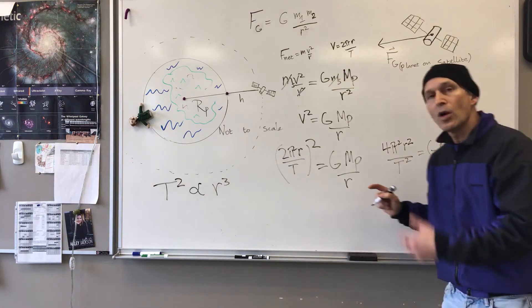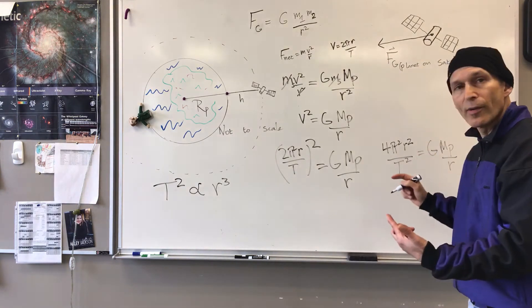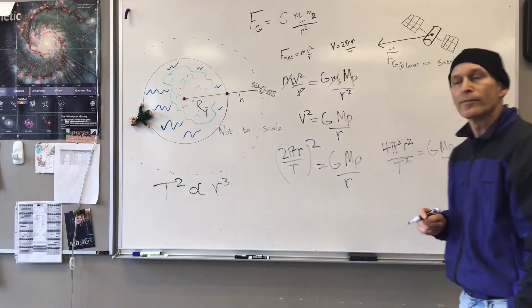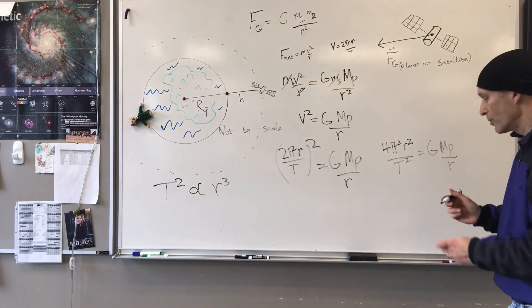So now we just want to do a little bit of rearranging to get T on one side and R on the other. So we can see whether they are actually proportional to each other.